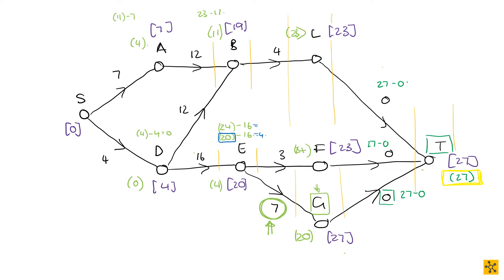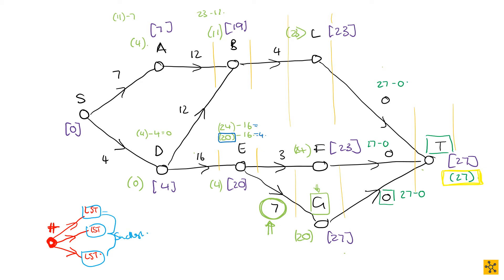Just to recap the entire process: you have the vertex you're investigating the latest start time for. You look at all the arcs radiating out of it and look at their latest start times. You select the minimum from this group — the smallest — and then you take the smallest minus the weight of the arc radiating in towards this vertex. That gives you the latest start time of that particular vertex.